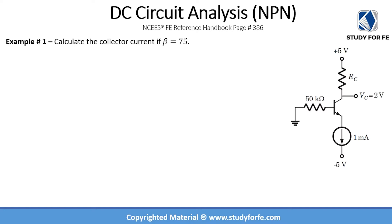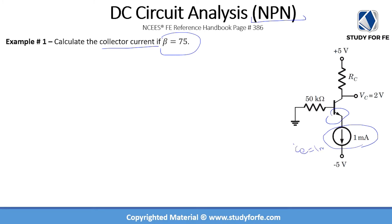Example one: we are given a BJT circuit and asked to calculate the collector current if beta equals 75. This is an NPN BJT. An important observation is that the emitter has a current source connected, which means IE is fixed at 1 milliamp. Another piece of information provided is that the collector voltage VC equals 2 volts.